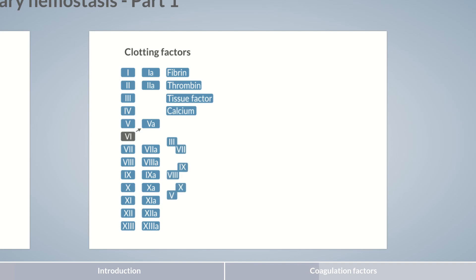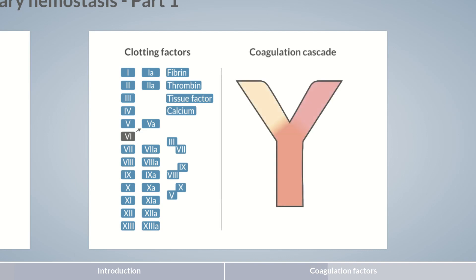We'll take you step by step through this topic, starting with a closer look at the order in which the various factors participate in the coagulation cascade. The extrinsic pathway is initiated by factor III, which forms a complex with factor VII. This complex can activate factor X in the common pathway. Factor X and its cofactor V can cleave factor II, resulting in the formation of thrombin. In turn, thrombin cleaves factor I to fibrin, which forms fibrin strands.